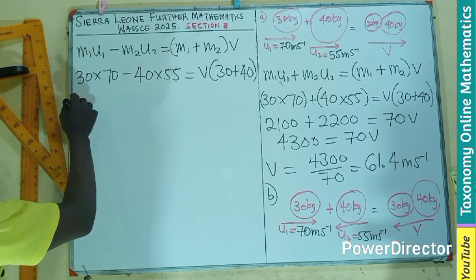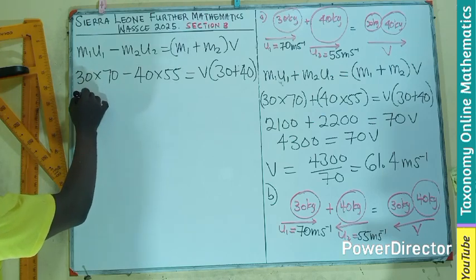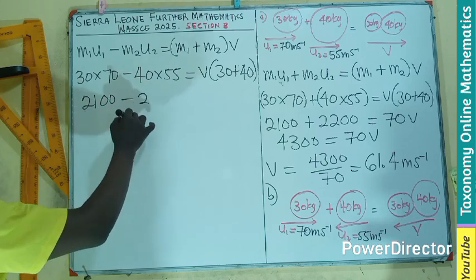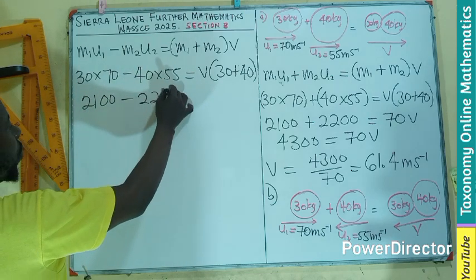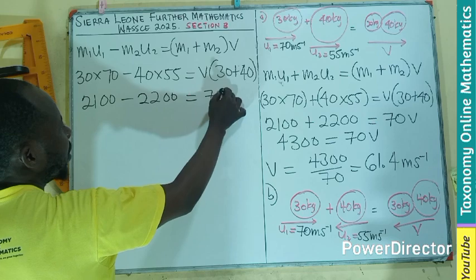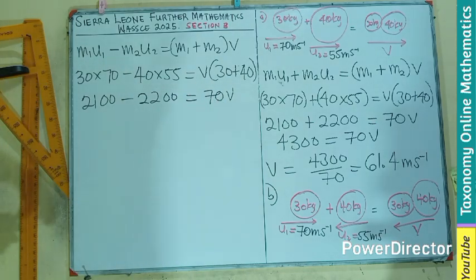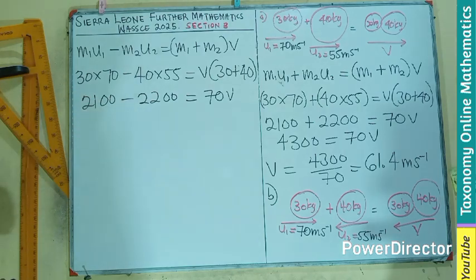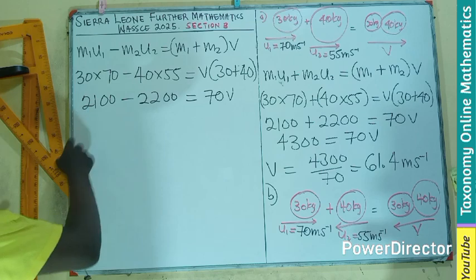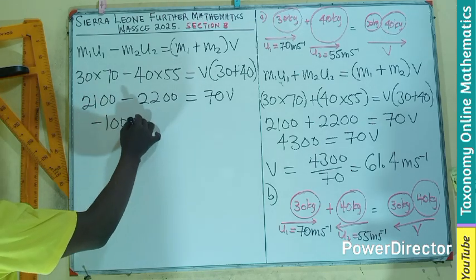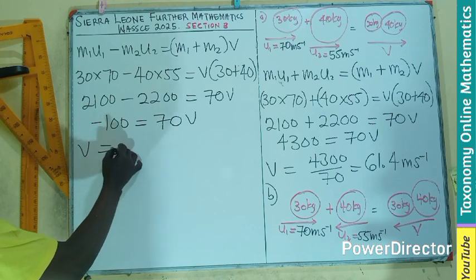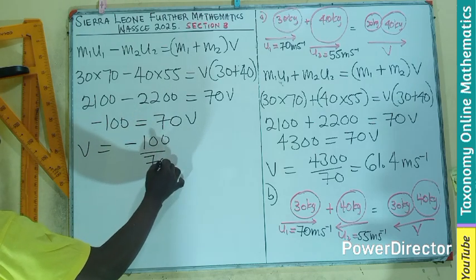So by that multiplication, we still have 2100, 2200 equals 70V. Here, there will be a subtraction. 100 here, 100 here. So if you subtract, you should be having only 100. We've got 200, 200 will go. So I'll be left with negative 100 equals to 70V. So your V will just be negative 100 over 70.